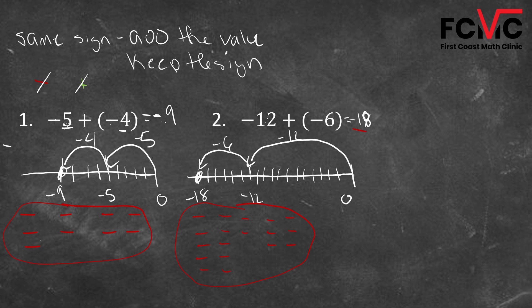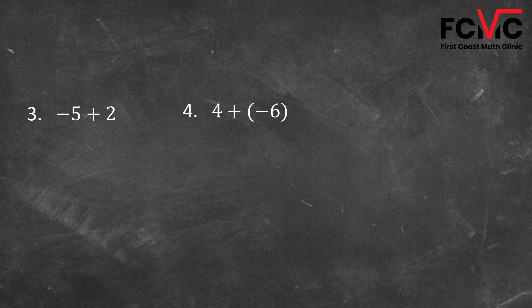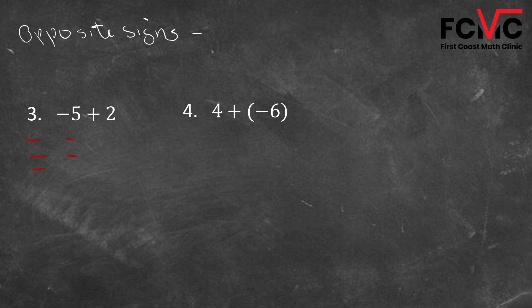Now let's get into a couple of examples where we're adding opposite signs. Here we've got negative five plus two, and four plus negative six. Let's come up with a rule for when we're adding opposite signs. For negative five plus two, we've got five negatives and two positives. The two positives and two negatives cancel out, and we're left with three negatives. So our answer is negative three.